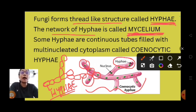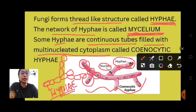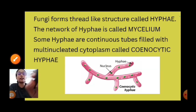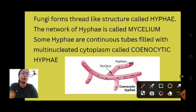Some hyphae are continuous tubes filled with multi-nucleated cytoplasm. You can see multiple nuclei — the green portions — in the cytoplasm. Multi-nucleated means multiple nuclei. This picture is showing coenocytic hyphae, where multiple nuclei are present in the cytoplasm.